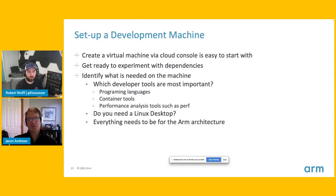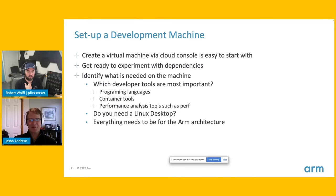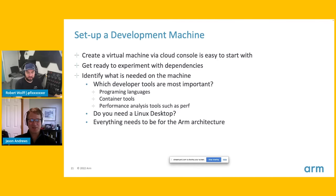If you're new to developing on ARM, here are a few tips. First, get a machine — all three cloud providers I'm demonstrating today have free tiers, some extremely generous. Once you have a machine, think about your application dependencies, do some experiments, and consider what tools you need: programming languages, container tools, performance analysis. Keep in mind this is a different architecture, though in many cases it'll feel just like any other Linux machine.